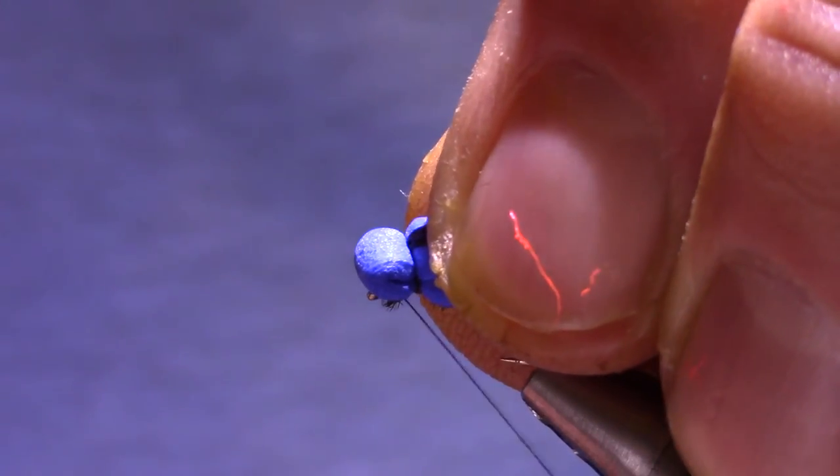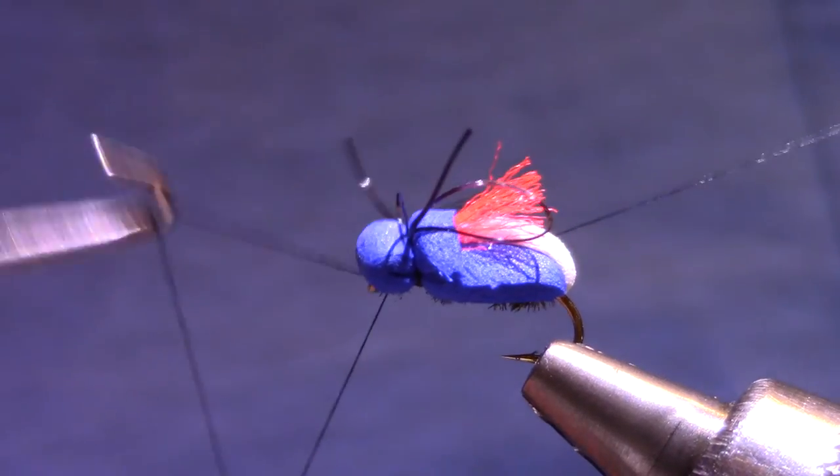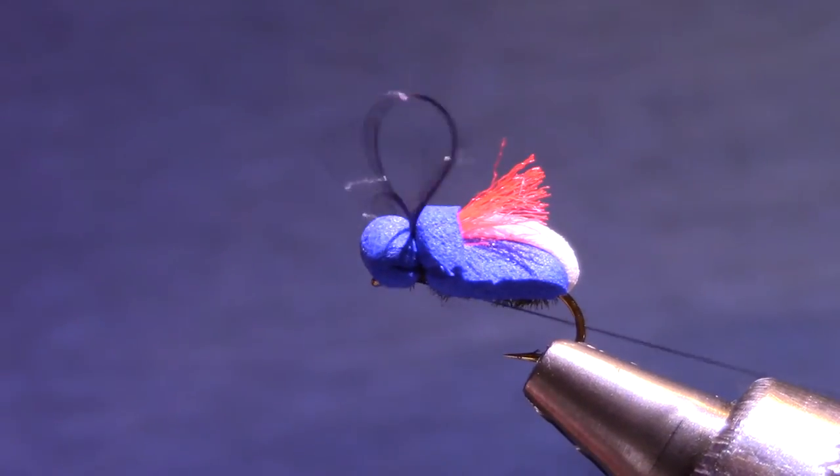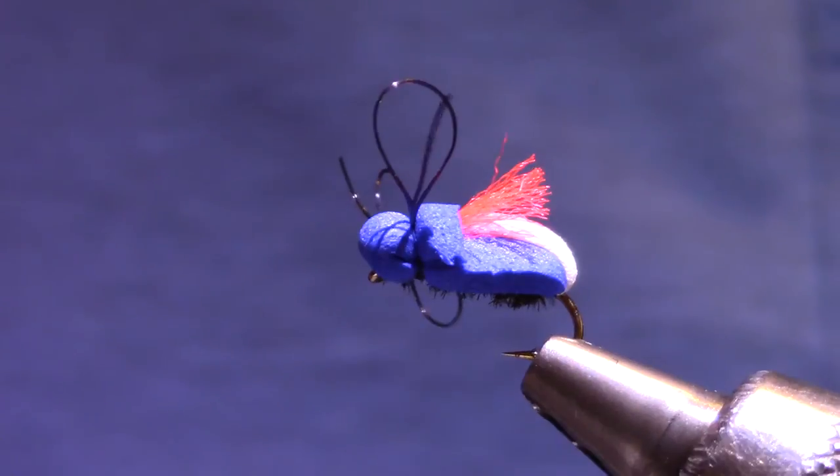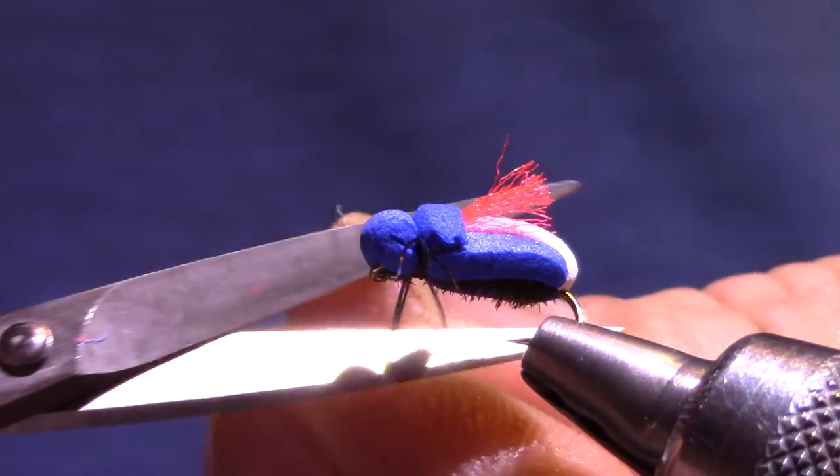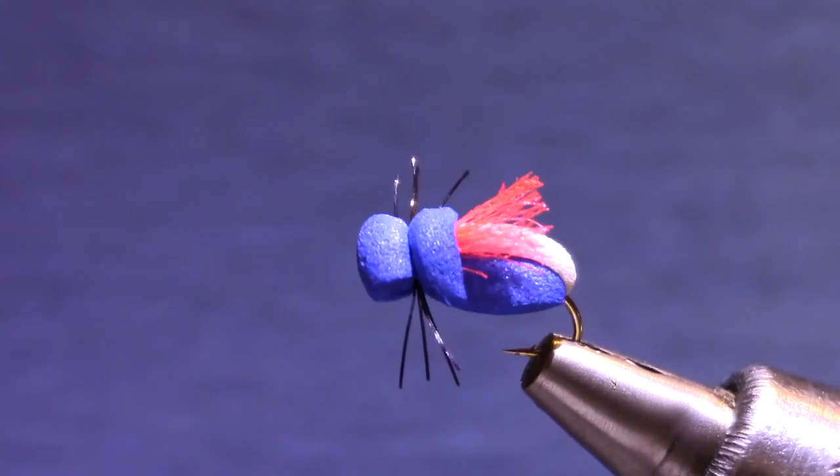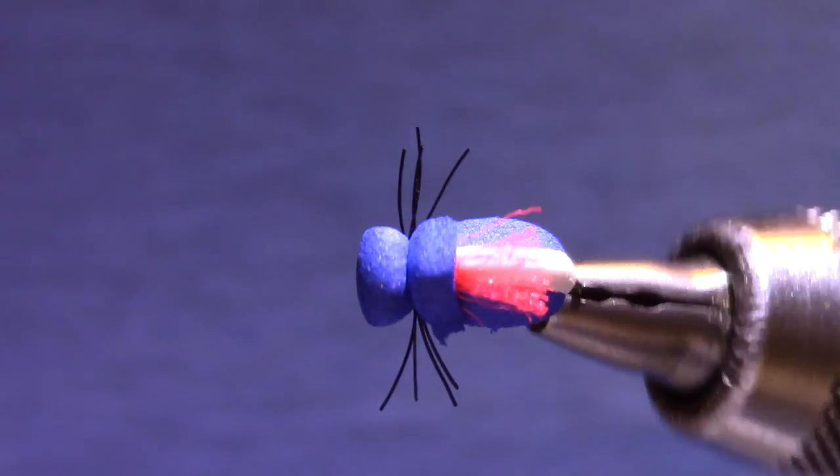I'm going to jump my thread right up underneath to the eye of the hook. Tie my whip knot. Now on each side I'm just going to kind of stretch them into place. Cut them at an appropriate level. And there you get some nice thin legs that will move with just a little bit of water current. So there we go, Patriot Beetle.